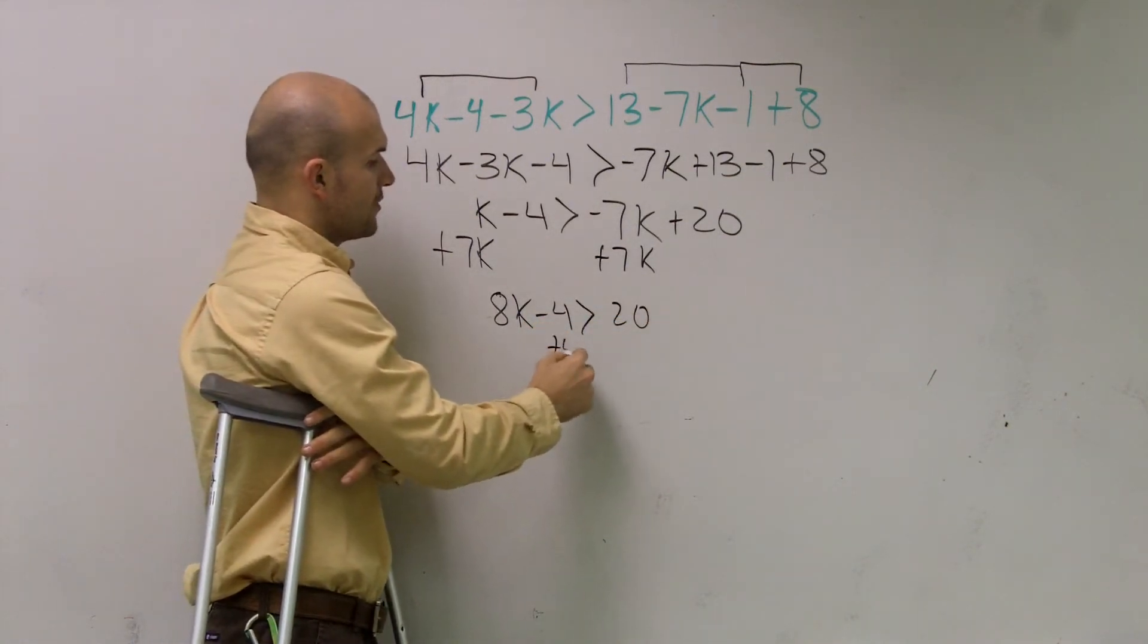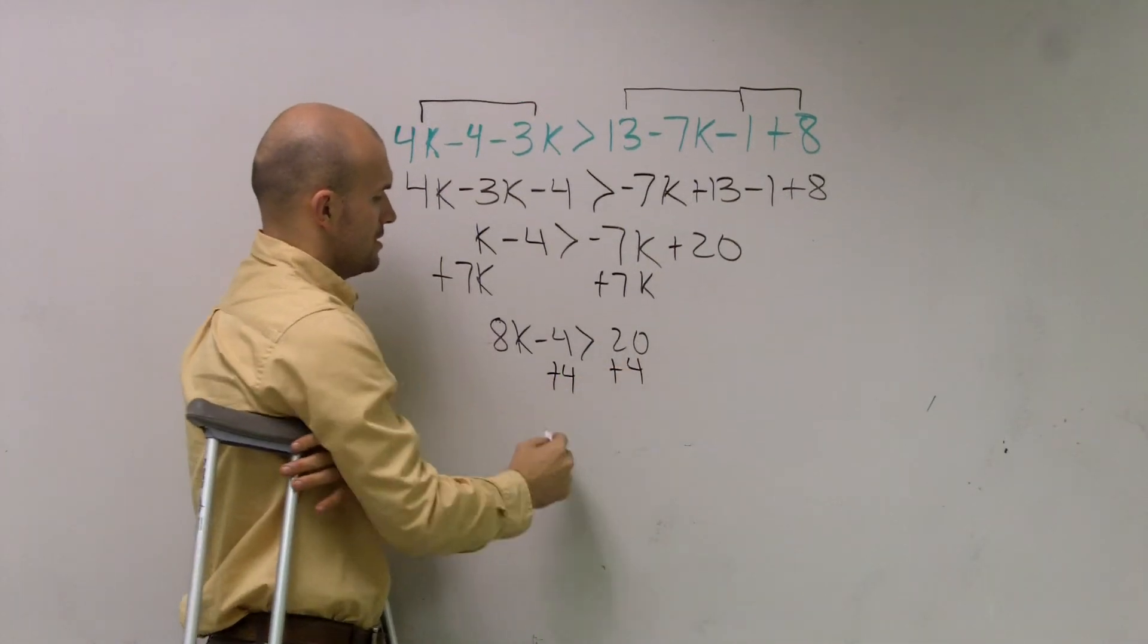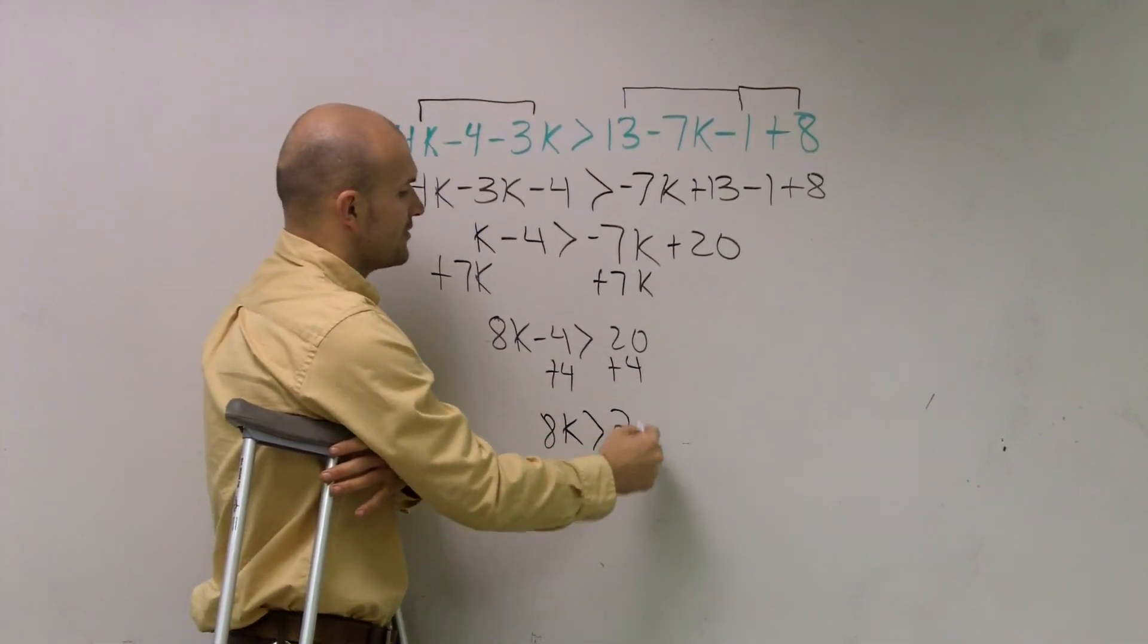Now what I'll do is I'll add a 4. So I have 8k is greater than 24.